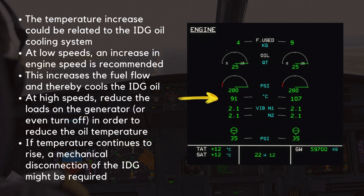The temperature increase could be related to the IDG oil cooling system. To reduce the oil temperature at low speeds, an increase in engine speed is recommended. This increases the fuel flow and thereby cools the IDG oil. When at high speeds, it is recommended to reduce the loads on the generator, or even turn off the generator, in order to reduce the oil temperature. If the temperature continues to rise, a mechanical disconnection of the IDG might be required.